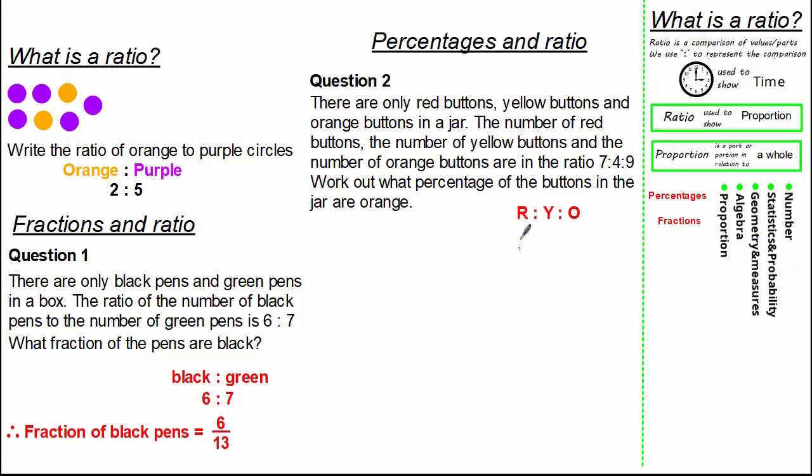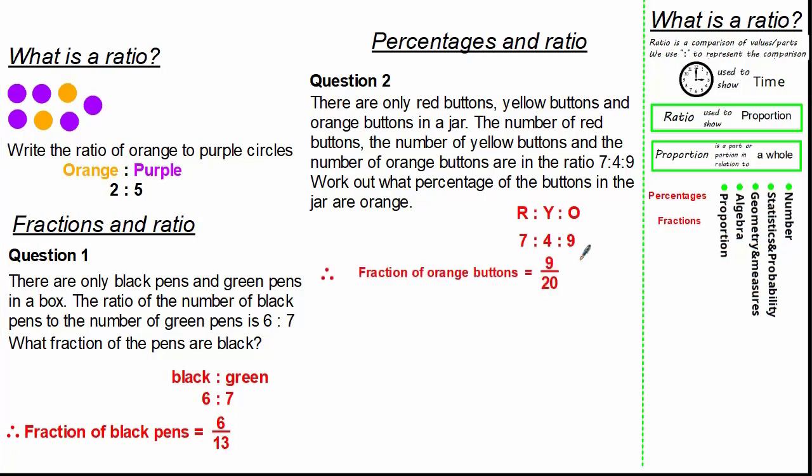The question states there are only red, yellow and orange buttons in a jar. The ratio of red to yellow to orange is 7 to 4 to 9. We are asked to work out the percentage of buttons that are orange. Firstly, write the ratios. Red to yellow to orange we know is 7 to 4 to 9.